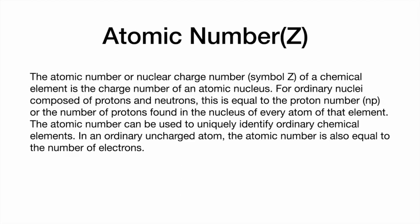Next we will see about atomic number. The atomic number, or nuclear charge number, of a chemical element is the charge number of an atomic nucleus. For ordinary nuclei composed of protons and neutrons, this is equal to the proton number, because the neutron has no charge. The number of protons found in the nucleus of every atom of that element is what the atomic number is about. Atomic number can be used to uniquely identify ordinary chemical elements. In an ordinary uncharged atom, the atomic number is equal to the number of electrons.